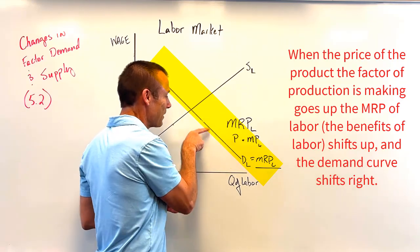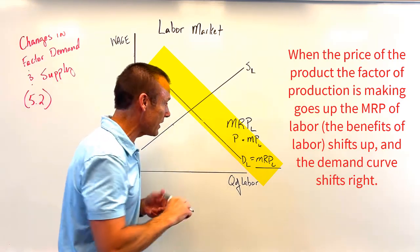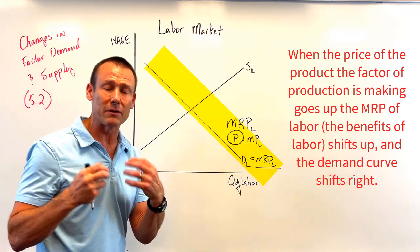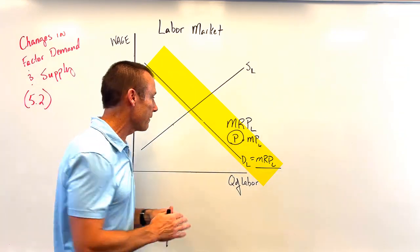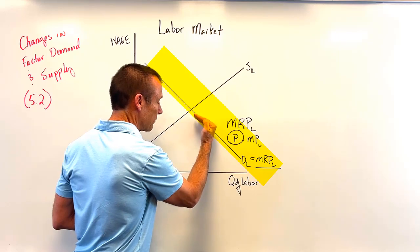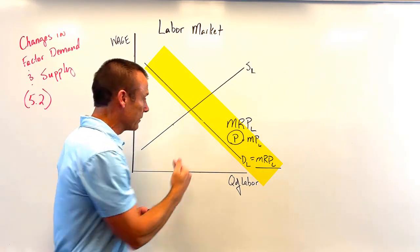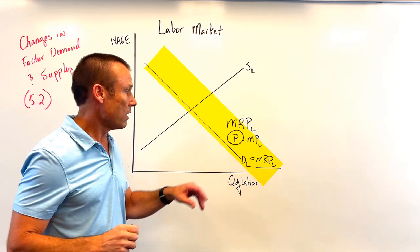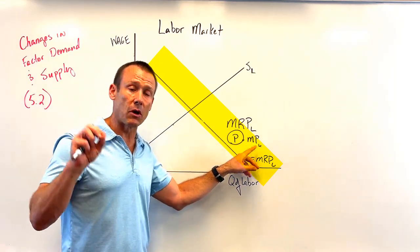If the marginal revenue product is going up, that means the demand curve is shifting right. So we're looking for changes in the price of the output. The opposite is true — if the price goes down, we're going to see that demand shift to the left because marginal revenue product is going down.